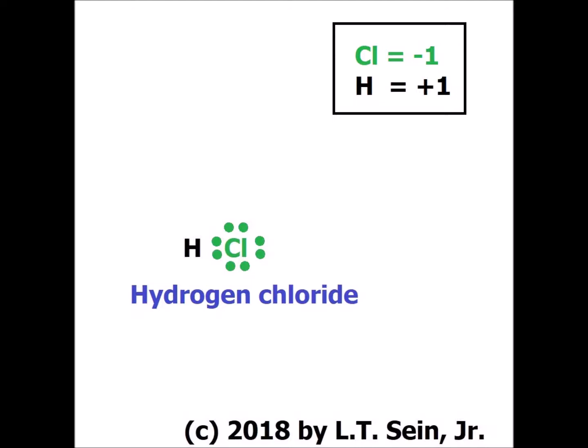Similarly, hydrogen started with one electron and now has zero, so it has an oxidation number of plus one in hydrogen chloride, which is what we call it as a gas. If it were dissolved in water, we would call it hydrochloric acid.